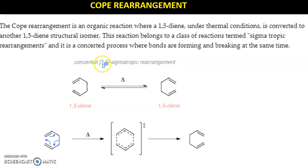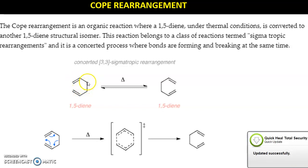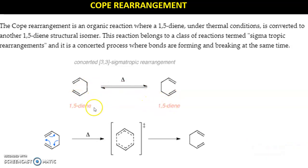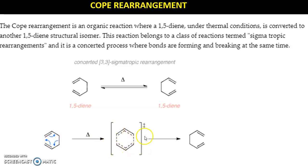If this bond shifts here, this bond shifts here, and this bond breaks to form a new bond between the 3,3 positions, we get the rearranged product. You can start numbering from either end. This bond shifts here, this bond shifts here, this bond shifts here — it is a concerted cyclic transition state. Concerted means bond breaking and bond formation are taking place simultaneously, and we finally get the product.